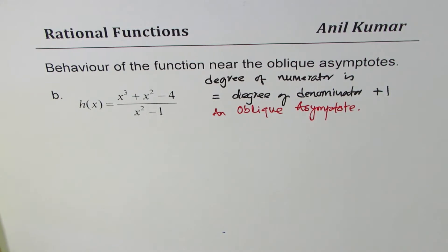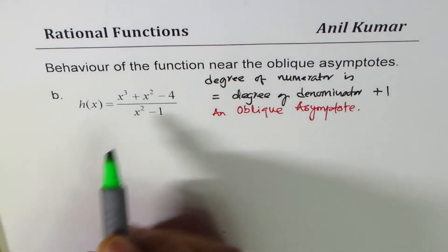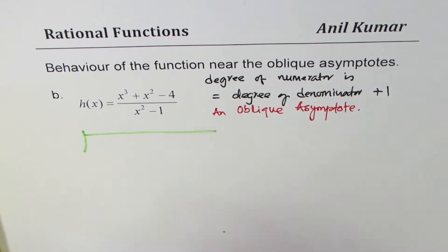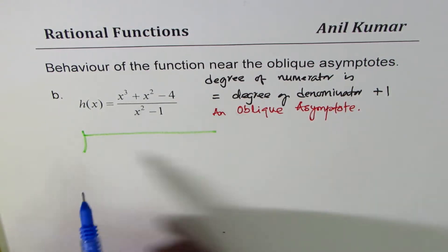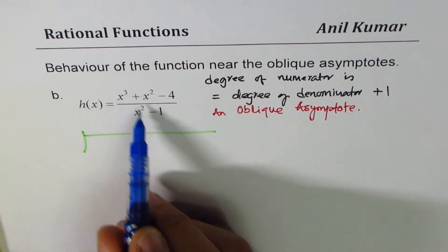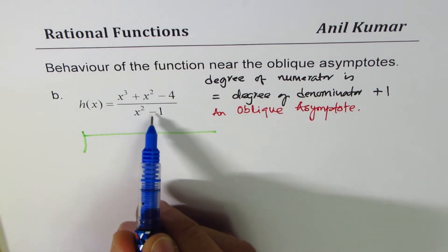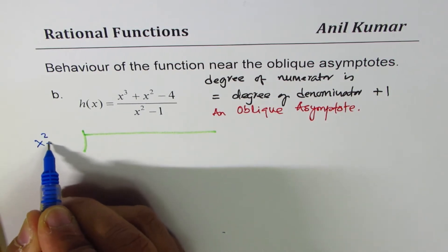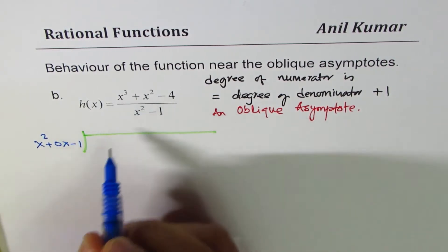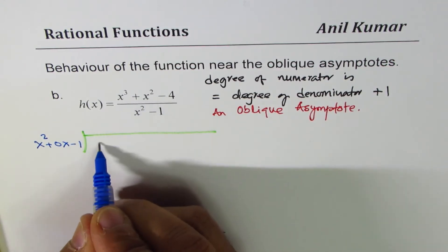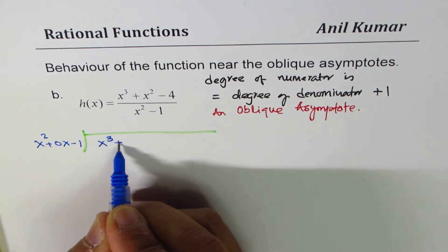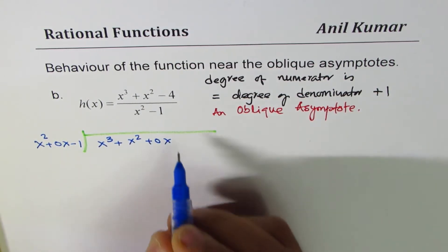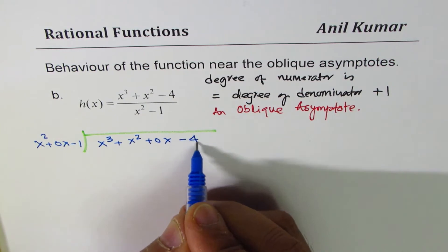You can get that by doing division. You have to divide the numerator by the denominator to get the equation of oblique asymptote. There are some missing terms here, so we will put placeholders. We will have x squared plus 0x minus 1. In the numerator also, we have missing terms: x cubed plus x squared, our placeholder 0x, and then minus 4.